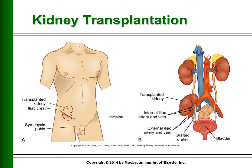This is a picture of the kidney transplant — the surgical incision in picture A and the transplanted kidney in picture B. It shows the internal iliac artery and vein anastomosis, the external iliac artery and vein anastomosis, and the grafted ureter into the bladder.